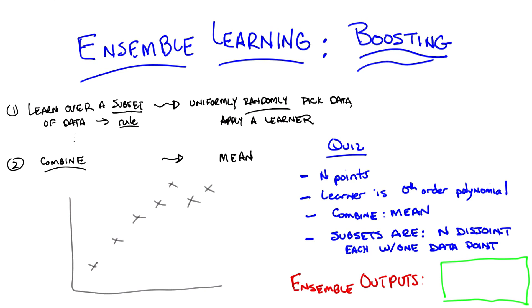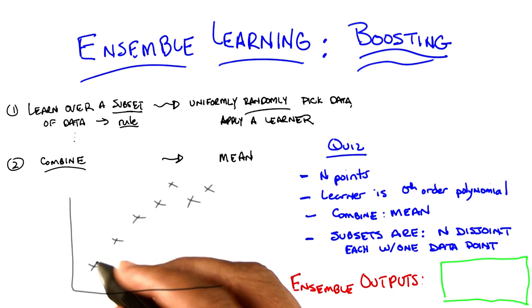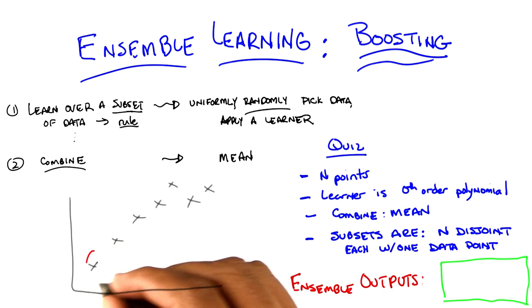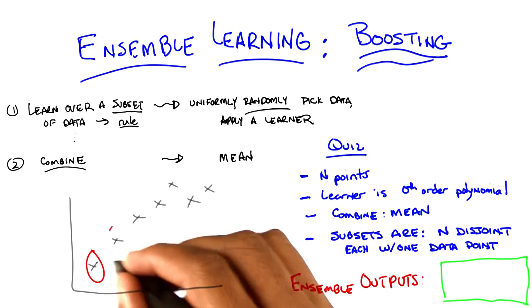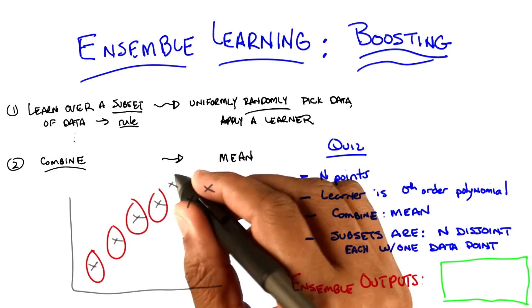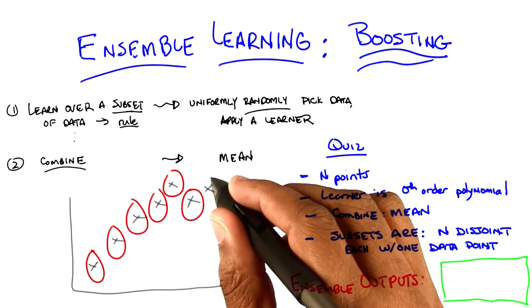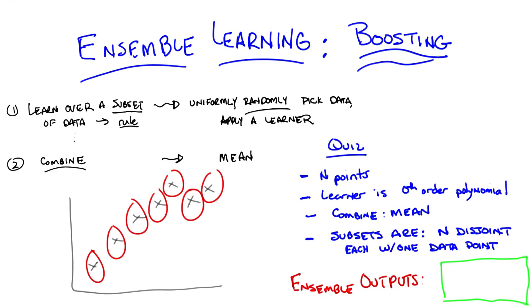I think I get that. Right, so if you look over here on your left, you've got a graph of some data points. And this is one subset, this is another subset, that's another subset, that's another subset, that's another subset, that's another subset, that's another subset, that's another subset. Got it? Yeah, now what do you want to know about it?